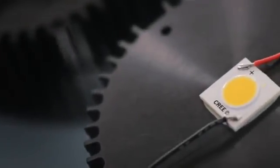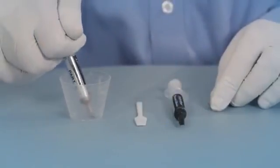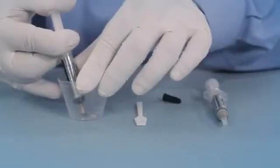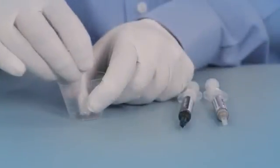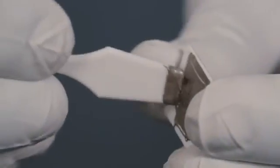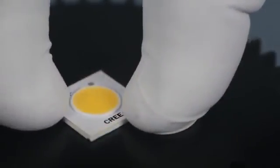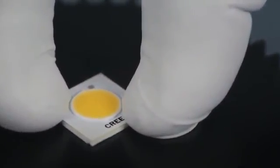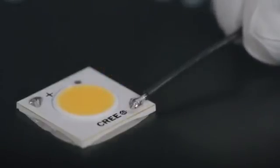Another easy option is connecting the CXA LED array using thermal epoxy. Apply it to the LED. Attach it to your heat sink. And then, solder leads to the CXA LED array.